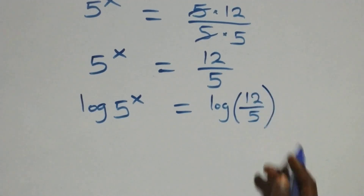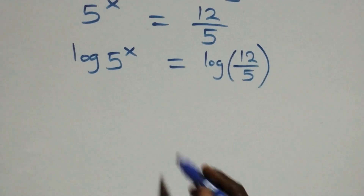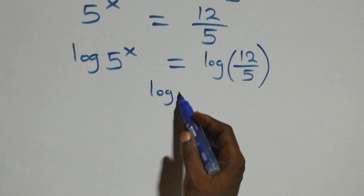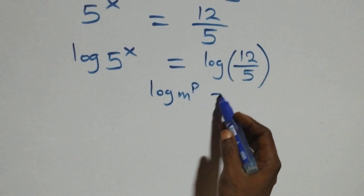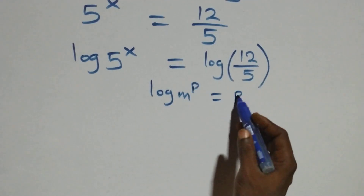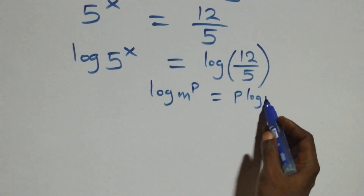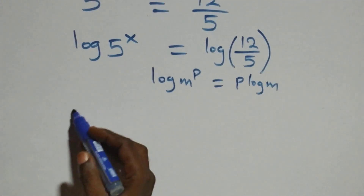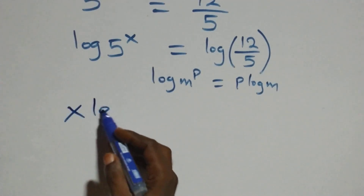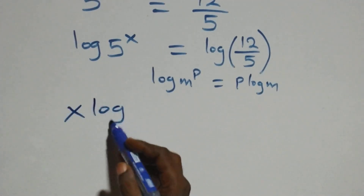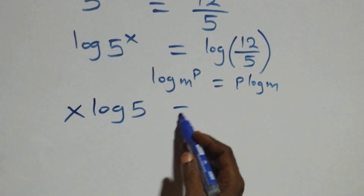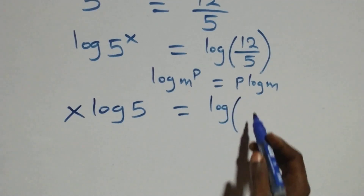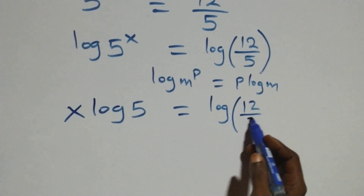We apply the power rule of logarithms. When we have log m raised to power p, this is the same as p times log m. So what we have here becomes x log 5 equals to log 12 over 5.